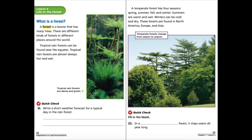Summers in a temperate forest are warm and wet, while winters can be cold and dry. These forests are found in North America, Europe, and Asia.